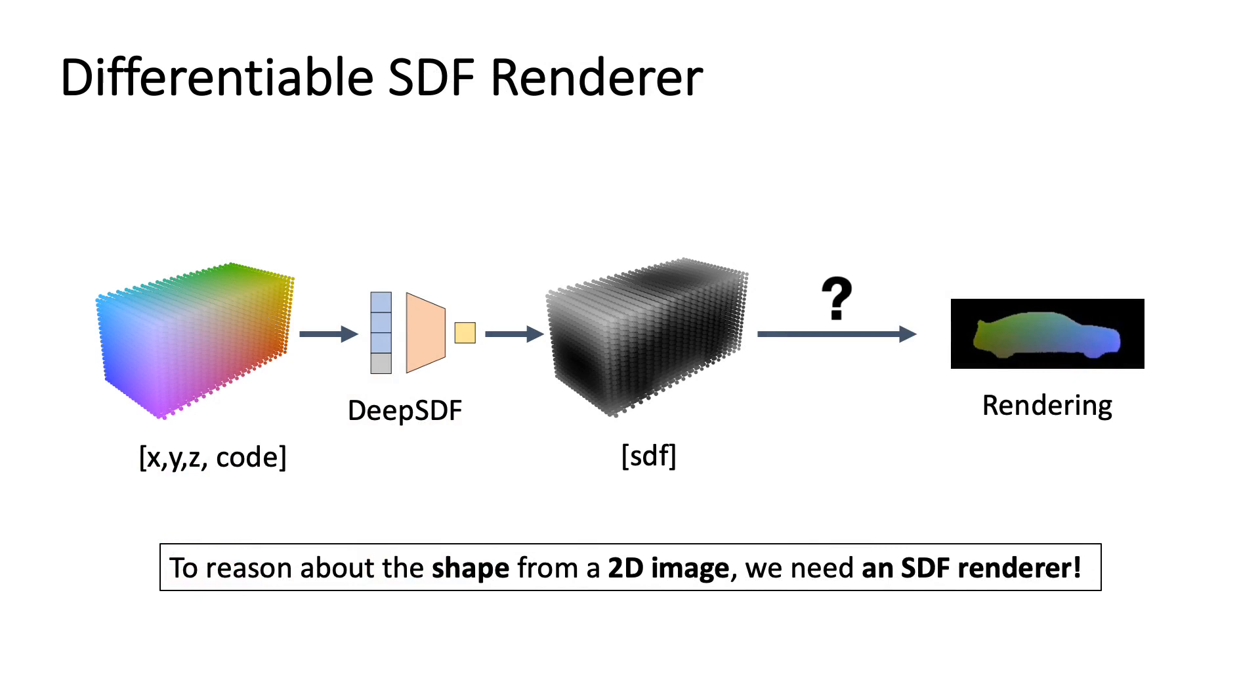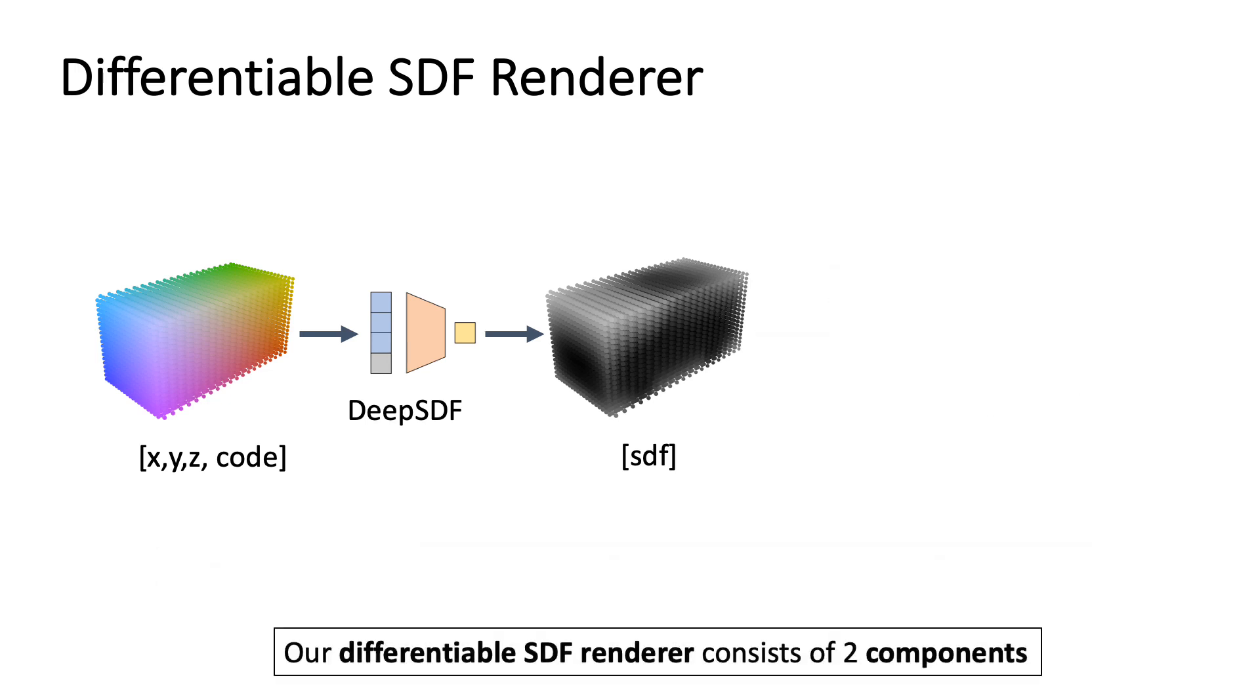An essential component of our auto-labeling pipeline is the possibility to reason about the pose and shape from 2D images. For that, we need a differentiable renderer working on the SDF representation used by our database. Since current differentiable renderers are purely mesh-based, we developed a custom one taking SDFs as input.